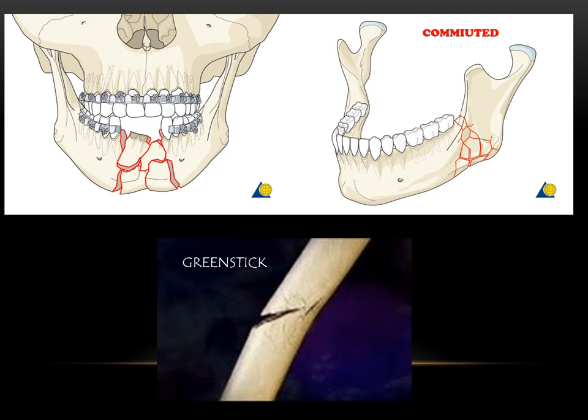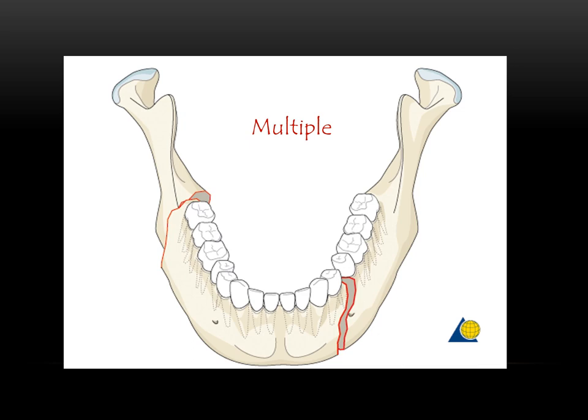A comminuted fracture is when the bone is splintered into multiple pieces. A greenstick fracture is more commonly seen in pediatric patients or younger individuals. In a greenstick fracture, one cortex is fractured — for example, the buccal cortex is fractured and the lingual cortex is intact — making it an incomplete type of fracture.